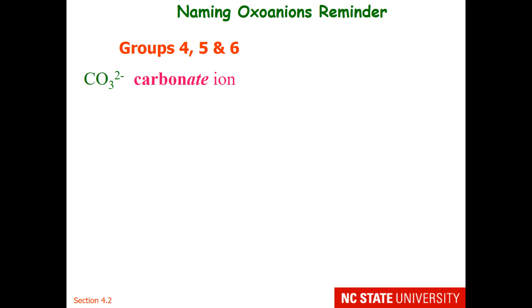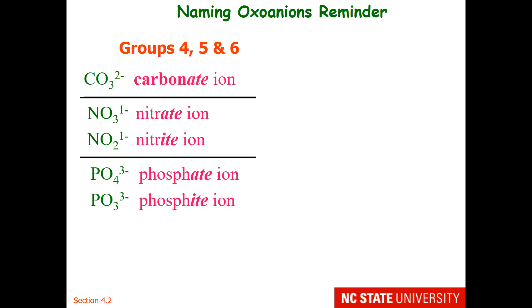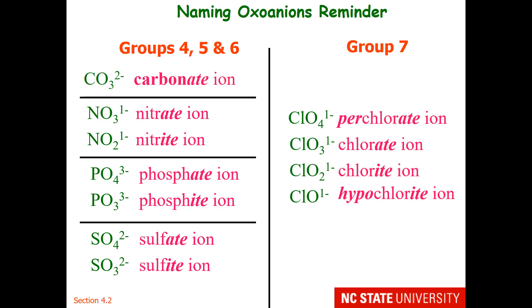Here are reminders of the common oxoanions. CO3(2-) is carbonate. For Group 5, we have nitrate or nitrite, and phosphate or phosphite. For Group 6, we might have sulfate or sulfite. And for Group 7 — which includes chlorine, bromine, or iodine as the central atom — 4 oxygens is perchlorate, 3 is chlorate, 2 is chlorite, and 1 is hypochlorite. Those are the most common ones you will encounter.